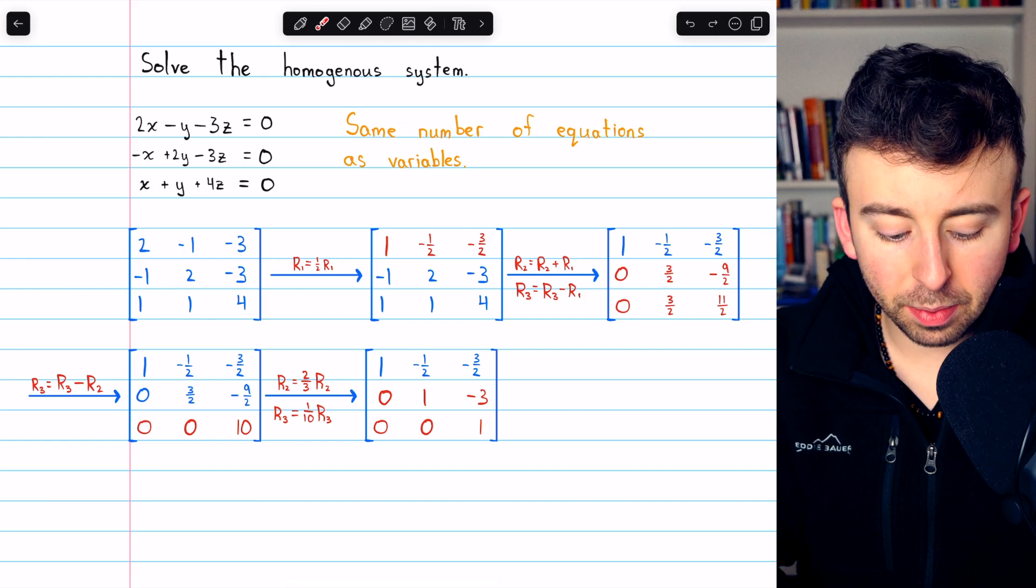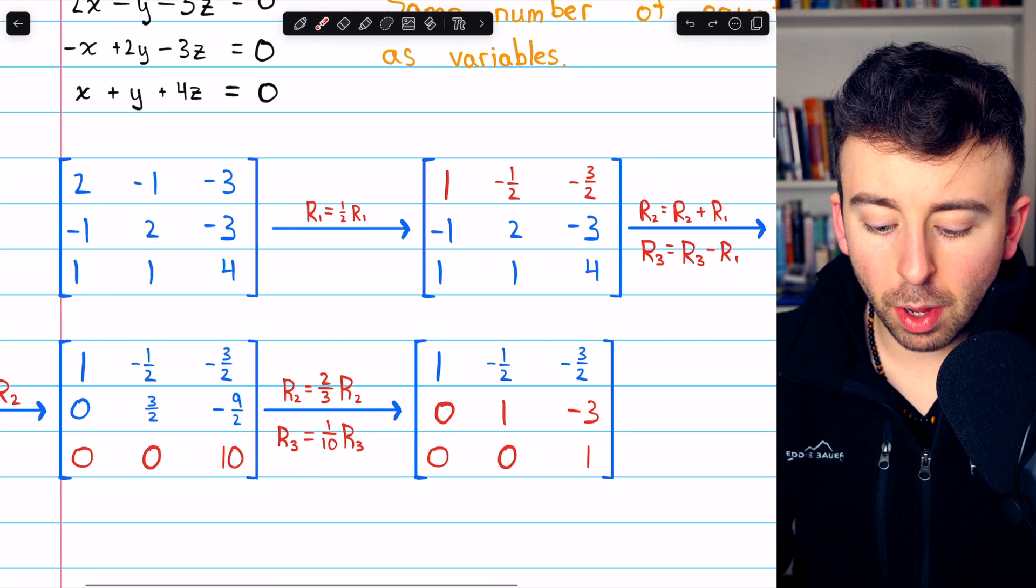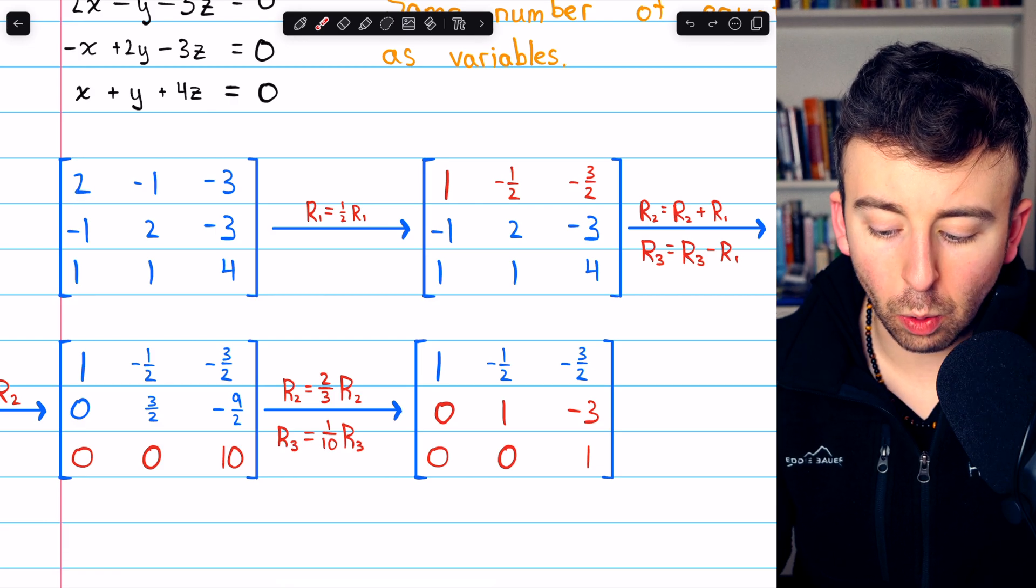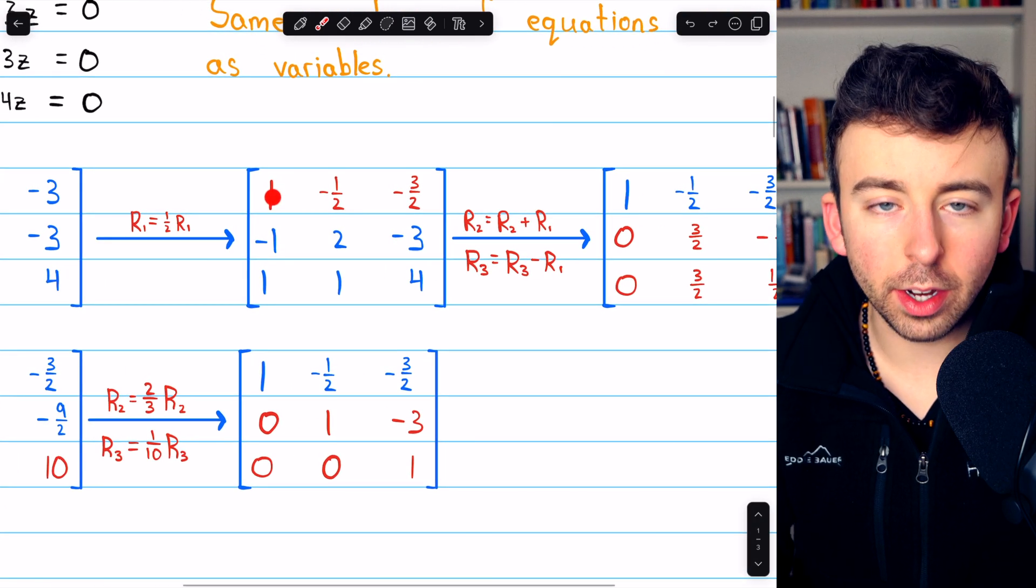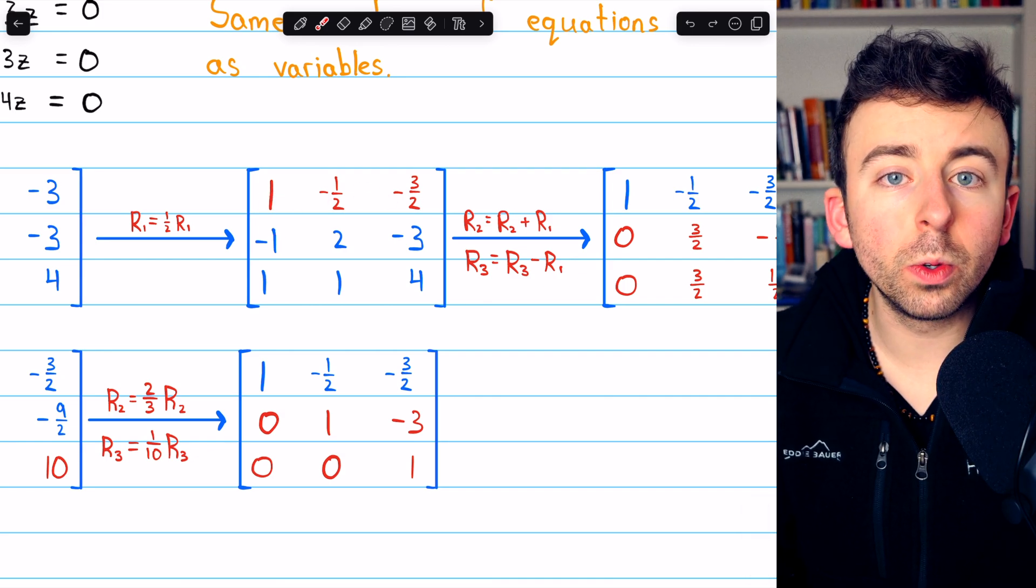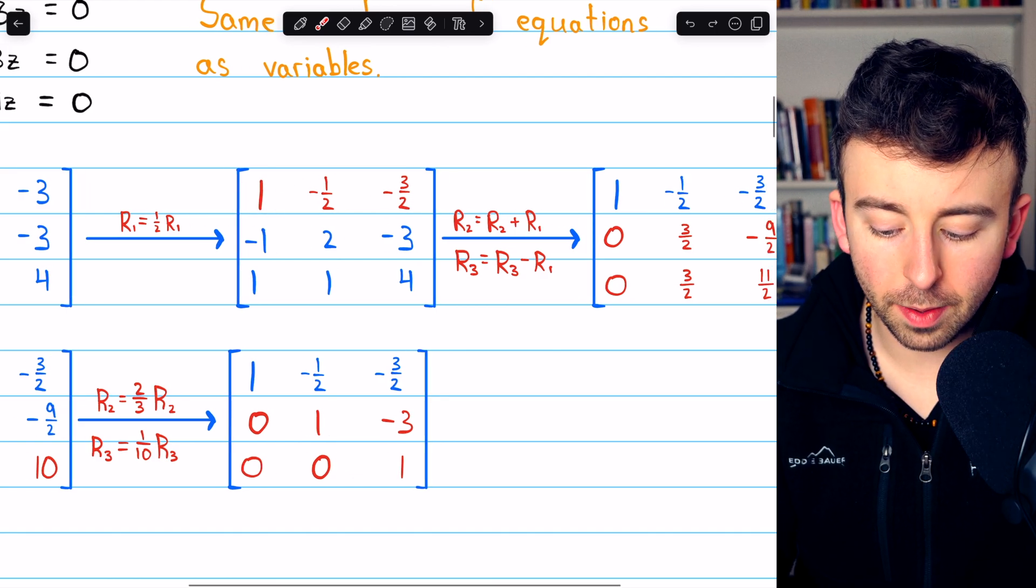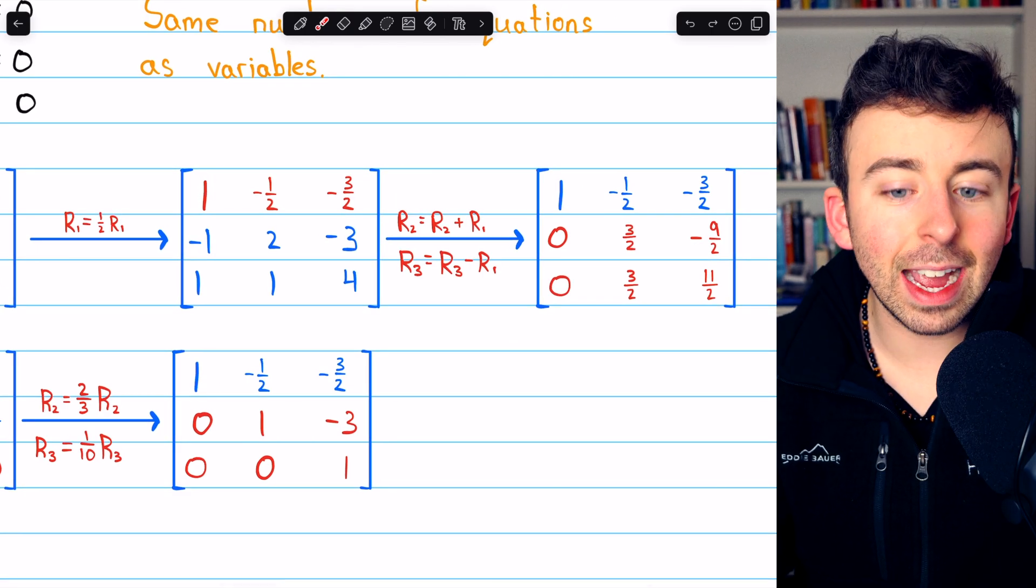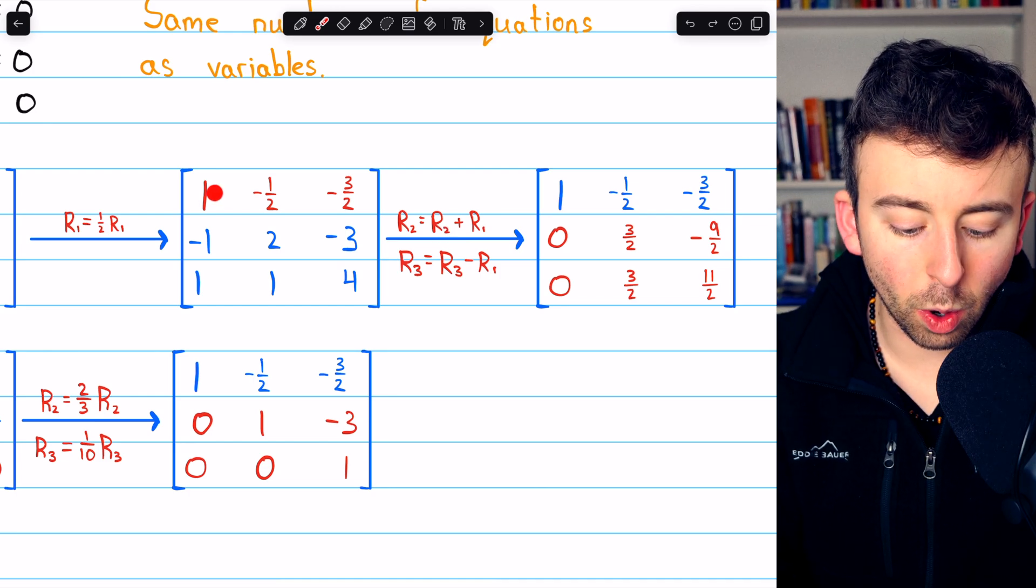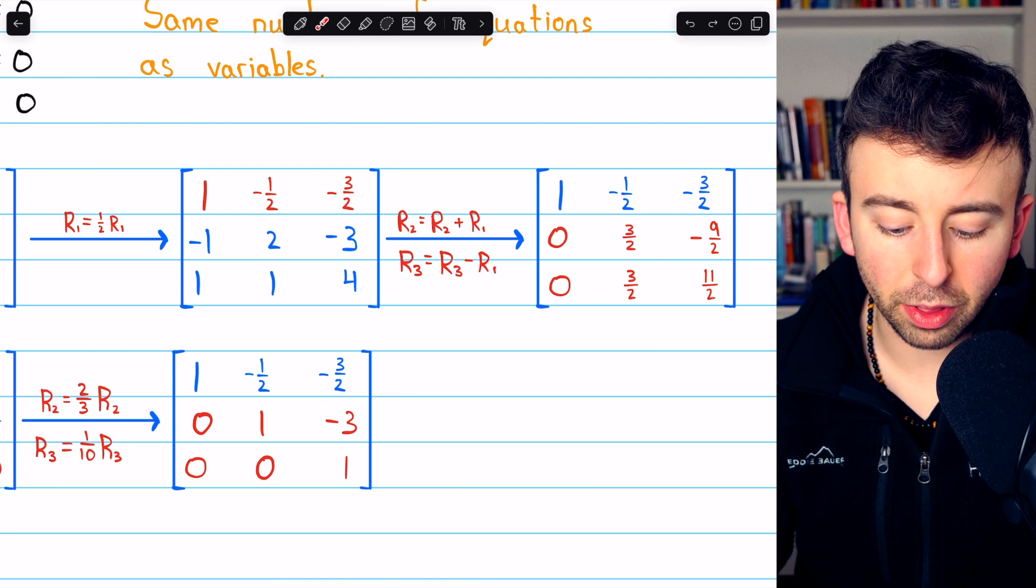I've written out all the steps here of Gaussian elimination, but let's just quickly walk through them. This first step is multiplying row one by one half in order to turn this leading entry into a one. Now that we have a leading entry of a one in row one, we can add multiples of row one to rows two and three to get zeros below this leading one. So we'll add row one to row two, and we'll subtract row one from row three.